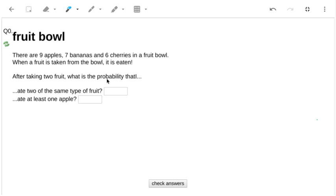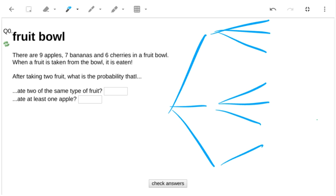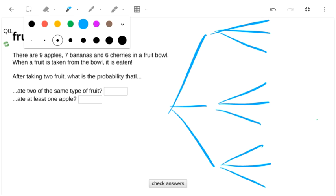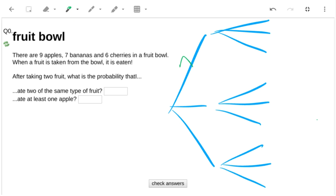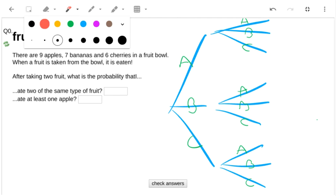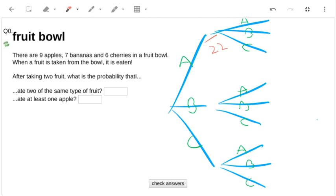Right, this is a slightly more complicated probability question. Let's start by drawing out one of these probability trees - apples, bananas, cherries, ABC, ABC, ABC. And now putting in some of the probabilities, I'll start with the bottom number.